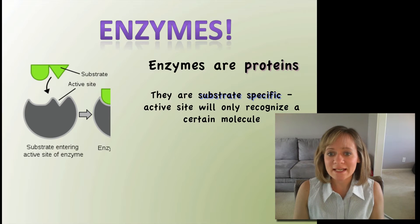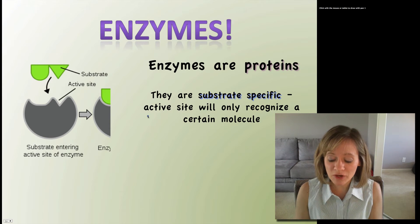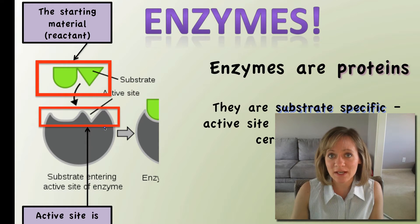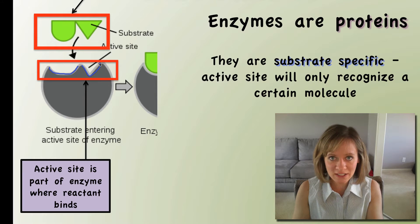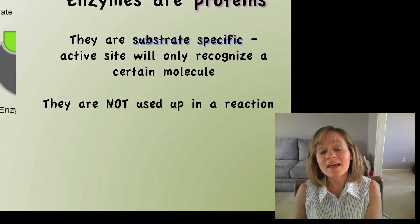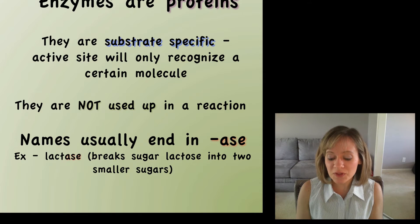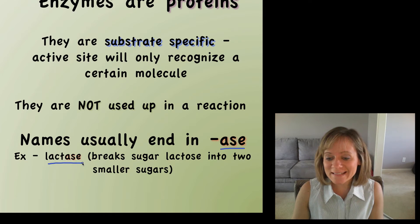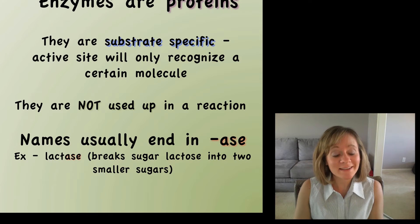Enzymes are proteins and they are substrate specific, meaning their active site will only recognize a very specific molecule, or substrate. The substrate is the starting reactant, and the active site is the part of the enzyme where the substrate binds - the structures must fit together like a handshake. Enzymes are not used up in the chemical reaction; once they do their job they can be recycled and reused again and again as long as there's enough substrate. Enzymes are usually named with the ending -ase. For example, lactase is an enzyme that breaks down the sugar lactose - the first part of the enzyme name is typically the substrate.